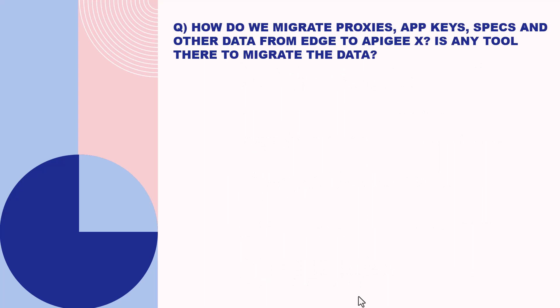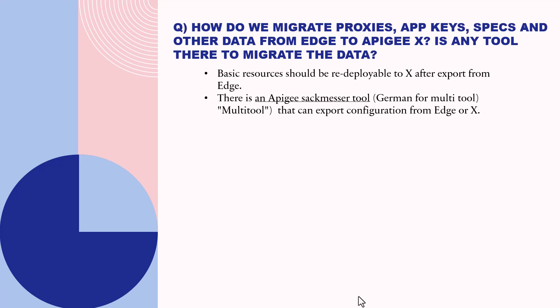How do we migrate proxies, app keys, specs, and other data from Edge to Apigee X? Is there any tool to migrate the data? The basic resource should be redeployable to Apigee X after export from Apigee Edge. There is an Apigee SackMessor tool — SackMessor is German for multi-tool — and it can export configuration from Edge or X. The code is available on GitHub.